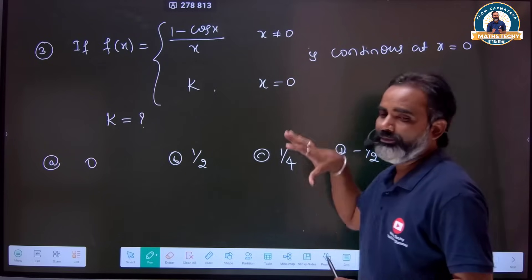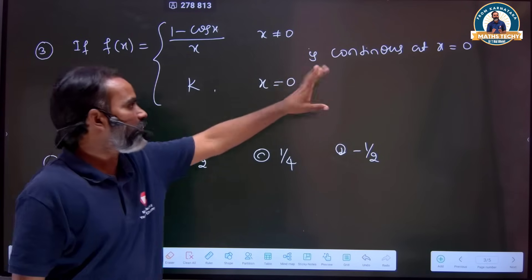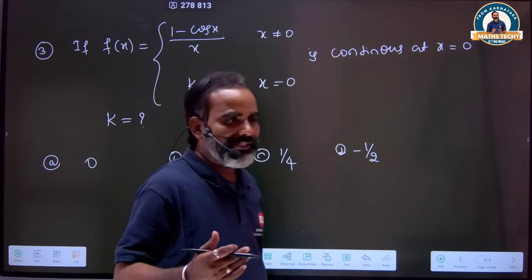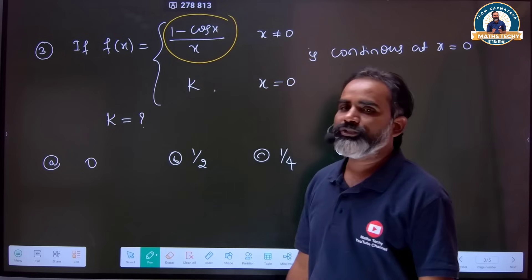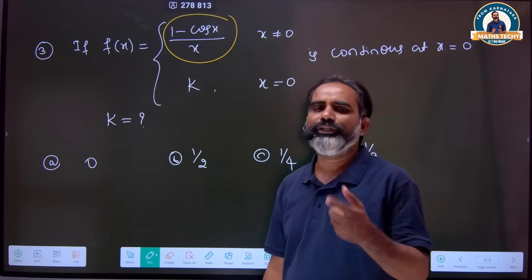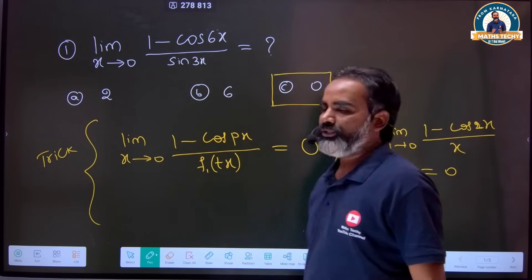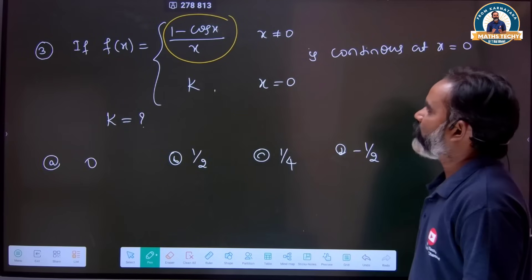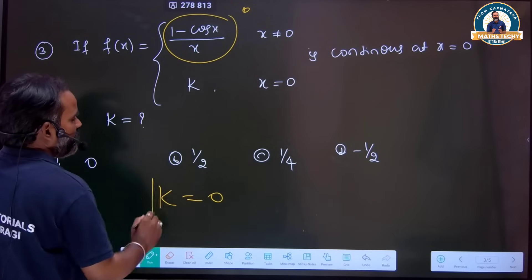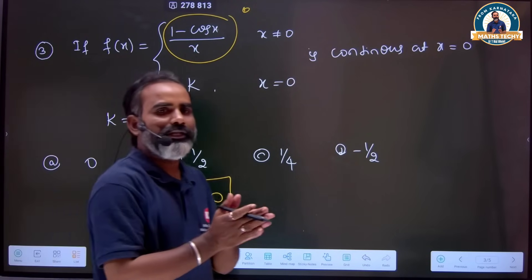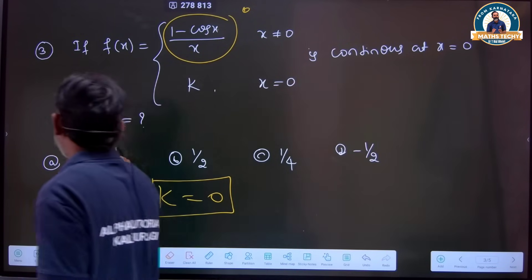Question number 3: we will take a continuity example. We have to find the k value for continuity at x equal to 0. Using the trick and standard result: 1 minus cos x divided by a single function — this answer will be 0. So k is equal to 0 directly, and the option A is correct.